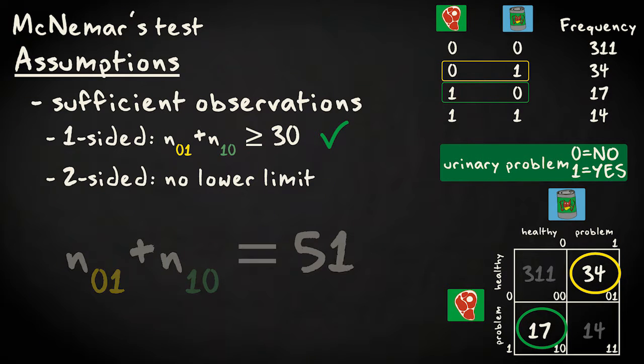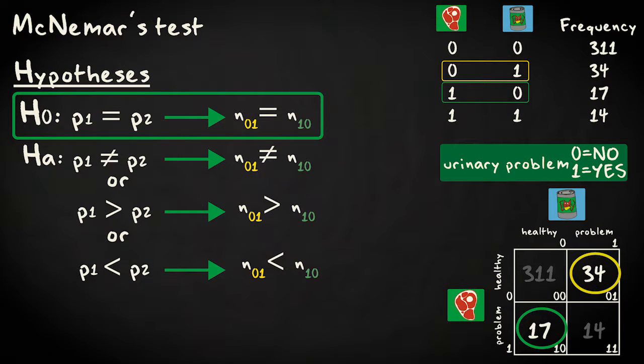In our example, we have enough inconsistent pairs. The sum is 51. The null hypothesis states that the proportion of urinary problems will be the same for raw and can-fed cats.